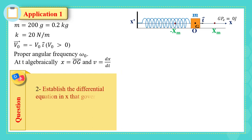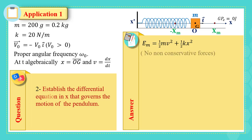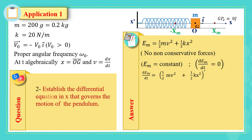Part two: establish the differential equation in x that governs the motion of the pendulum. We have two methods: Newton's second law or conservation of mechanical energy. Since the first question was about mechanical energy, we'll use conservation. The mechanical energy is ½mv² + ½kx². Since there are no non-conservative forces, the mechanical energy is constant, meaning its derivative equals zero. Taking the derivative, keeping in mind that the derivative of v² is 2v·v' and the derivative of x² is 2x·x'.